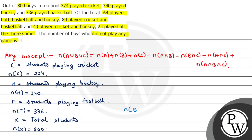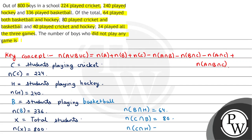Now, 64 played both basketball and hockey, so n(B∩H) = 64. The number of students playing cricket as well as basketball is 80, so n(C∩B) = 80. The number of students playing cricket and hockey is 40, so n(C∩H) = 40. And the number of students playing all three games — cricket, hockey, and basketball — is 24, so n(C∩H∩B) = 24.